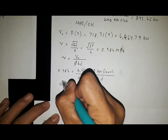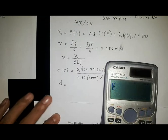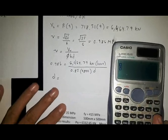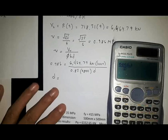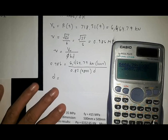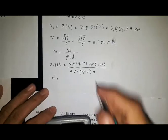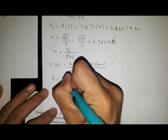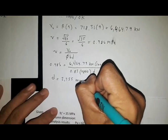From there we solve for D: 6464.79 times 1000 divided by 0.986 times 0.85 times 2800, giving us D of 2755 millimeters.